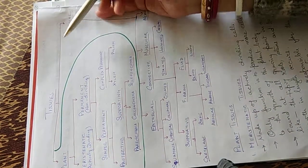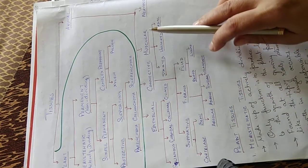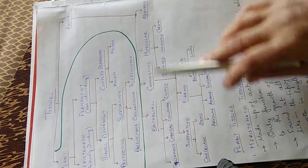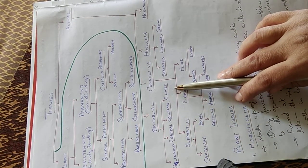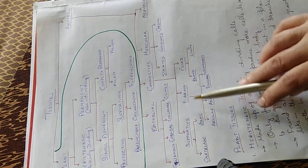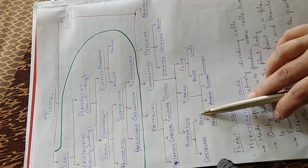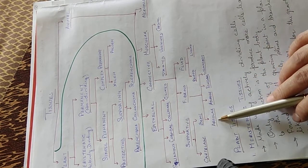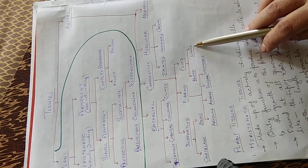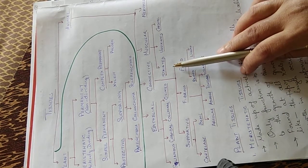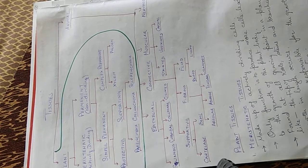Now the animal tissues are divided into four types: epithelial tissue, connective tissue, muscular tissue, and nervous tissue. Epithelial tissues are of squamous, cuboidal, columnar, and ciliated. Connective tissues are of supportive, fibrous, and fluid. Supportive tissues are cartilage and bone tissue. Fibrous tissues are areolar, adipose, tendons, and ligaments. Fluid tissues are blood and lymph. Muscular tissues are of three types: striated, unstriated, and cardiac. And the last is the nervous tissue.